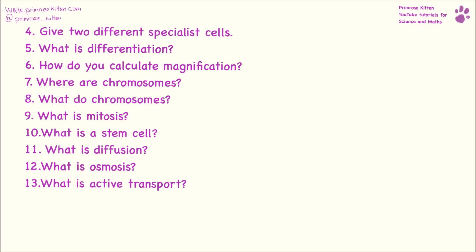Give two different specialist cells. For specialist cells you could have sperm cells, or you could have root hair cells. They are specialist cells because their structure and their function has been adapted to suit the job that they do. Differentiation is turning a general cell into a specialised cell.